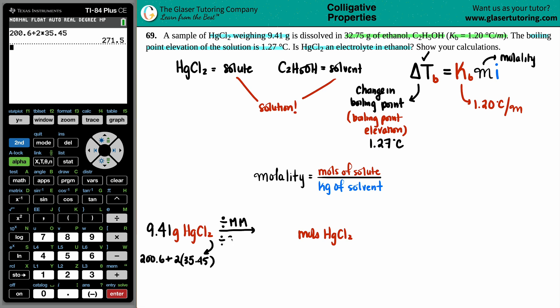So, I'm going to take my 9.41 and divide it by 271.5. 9.41 divided by this number, and I get 0.0347. So, we have the moles. The moles are 0.0347.